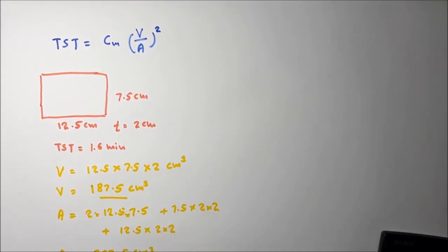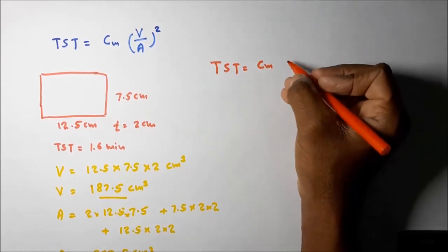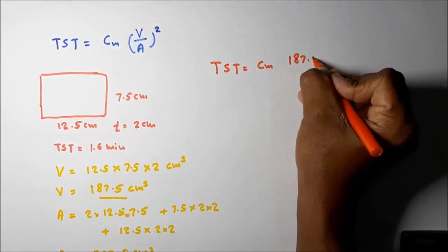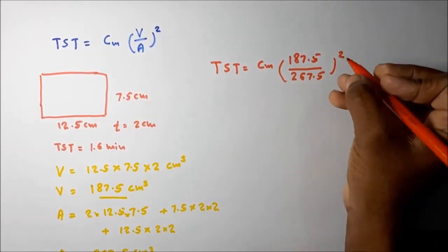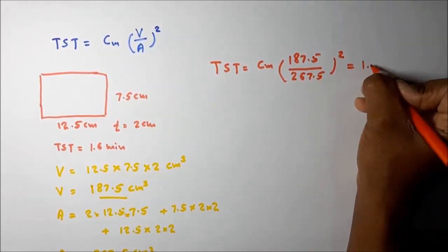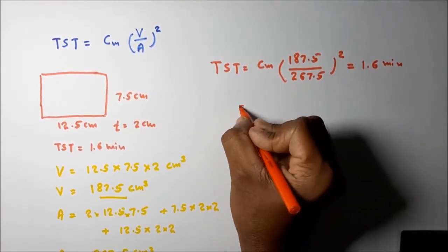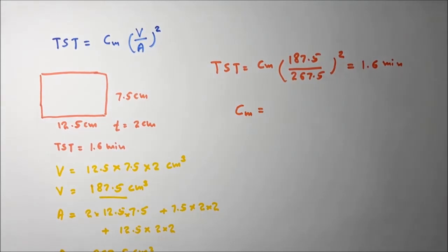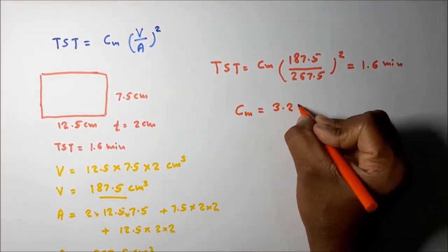I am going to substitute these two values into Chvorinov's rule to find the Cm mold constant. Total solidification time = Cm × (V/A)². So: 1.6 minutes = Cm × (187.5 cm³ / 267.5 cm²)². Simplifying: 1.6 divided by (187.5/267.5)² gives Cm = 3.2566. The unit of Cm is minutes per cm² (minute·cm²/cm²... i.e., min/cm²).